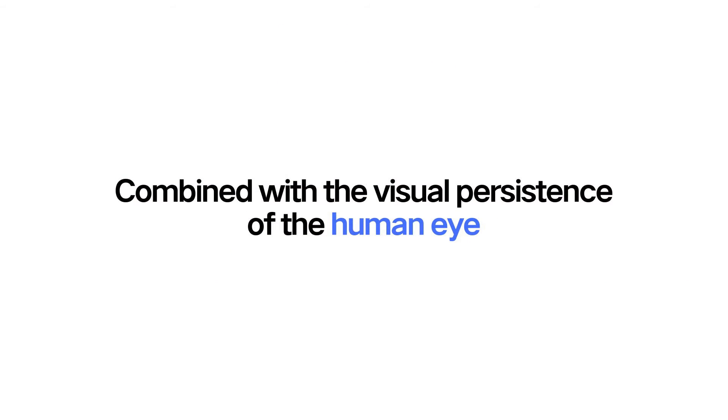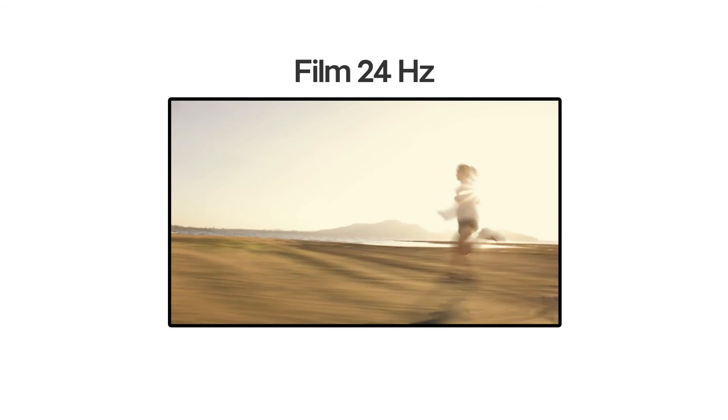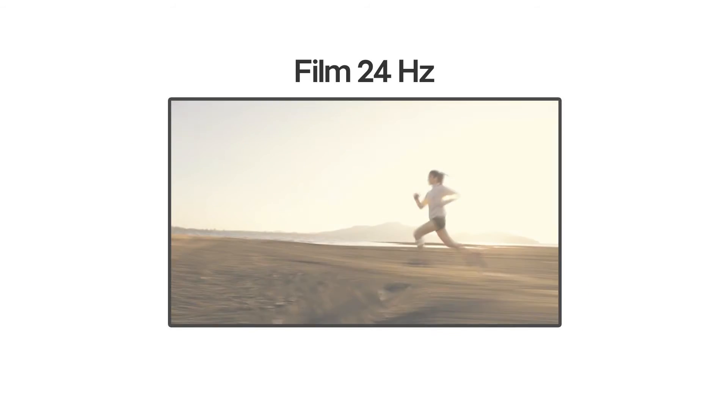Combined with the visual persistence of the human eye, the motion blurred frames in film screens create a clear and smooth visual experience when played in sequence.